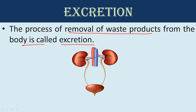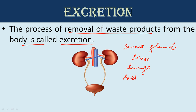There are several organs in the body that are involved in the process of excretion, such as sweat glands, liver, lungs, and the human excretory system — or you can say the kidney system.